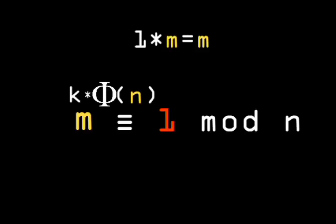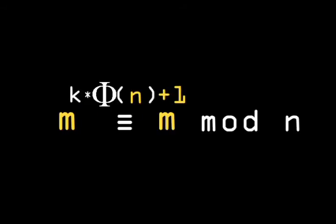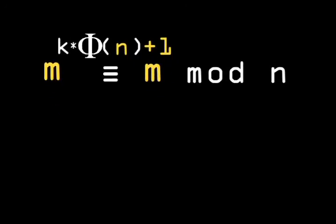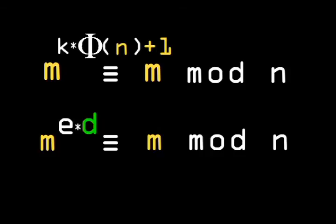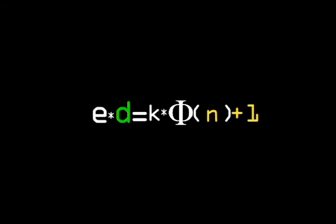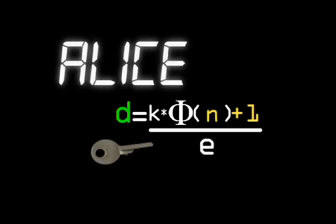And this can be simplified as m to the power of k times phi n plus 1. This is the breakthrough. We now have an equation for finding e times d, which depends on phi n. Therefore, it's easy to calculate d only if the factorization of n is known. Meaning d should be Alice's private key. It's the trapdoor which will allow her to undo the effect of e.